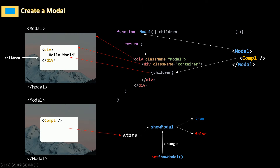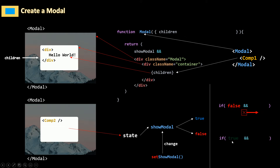Here I'm going to use some conditional rendering. I'll say: return showModal and return this JSX. In JavaScript, when you use the AND operator, if the left side is false, JavaScript doesn't need to evaluate the right side — it just skips it. But if it's true, JavaScript will go and check the expression on the right. So if showModal is false we don't show anything, but if showModal is true then we render the modal.